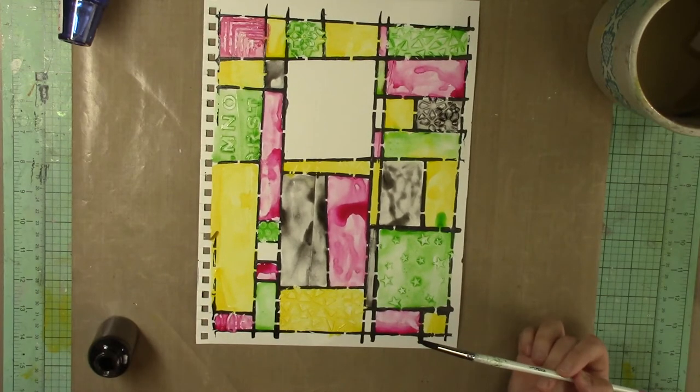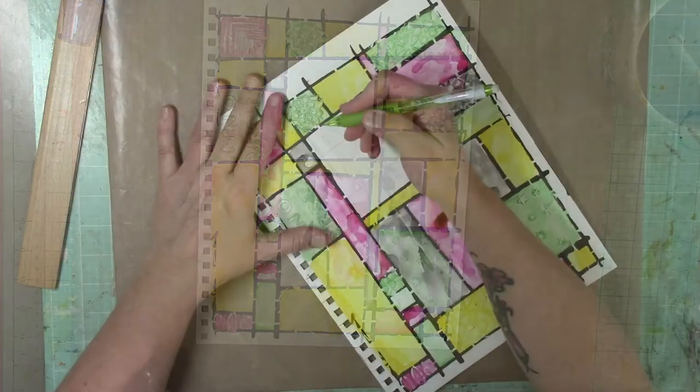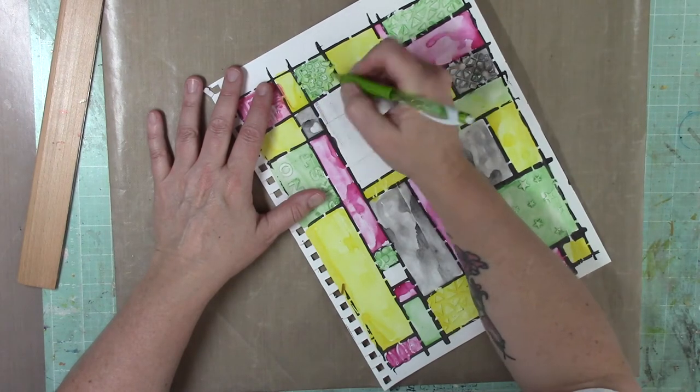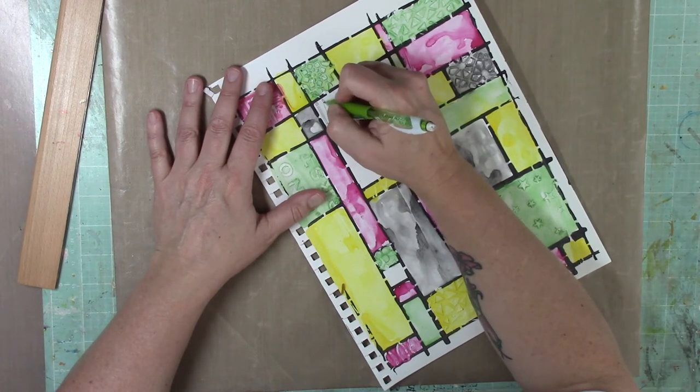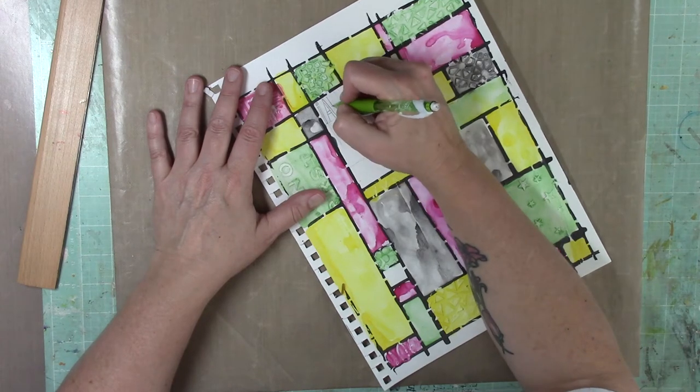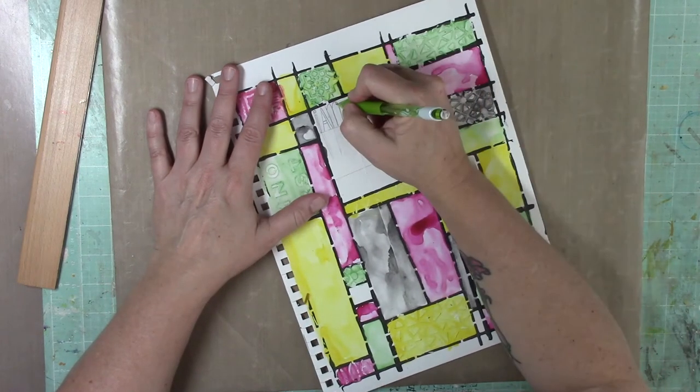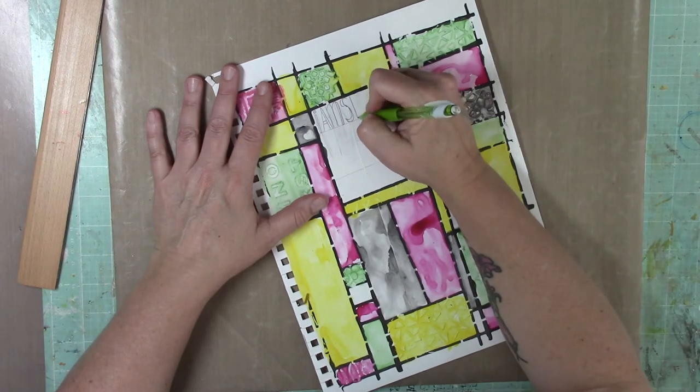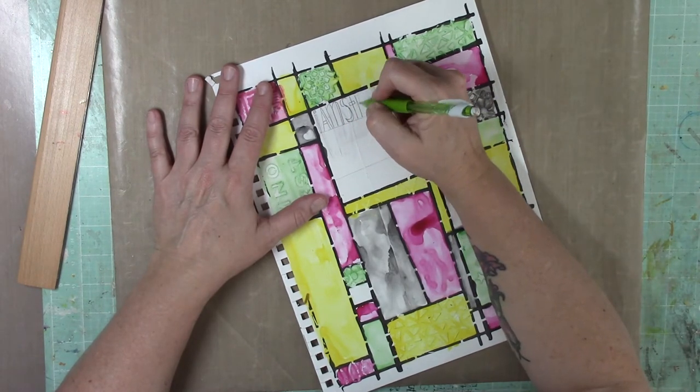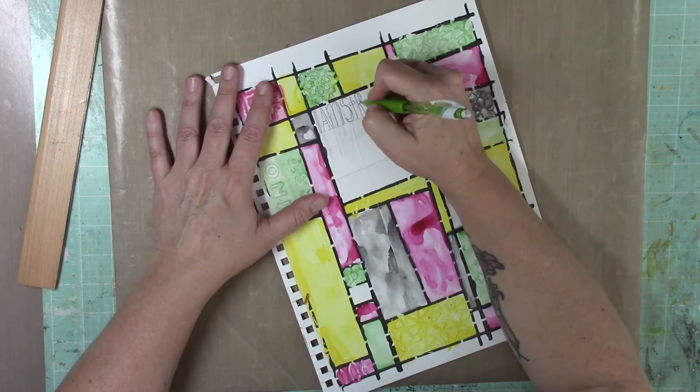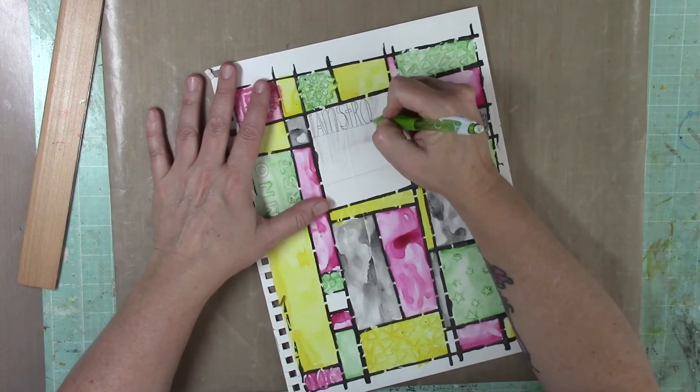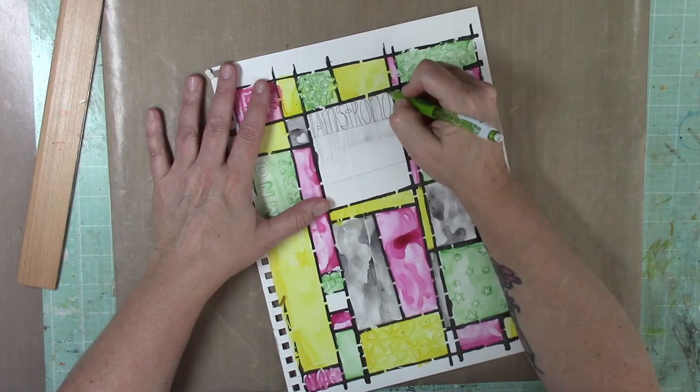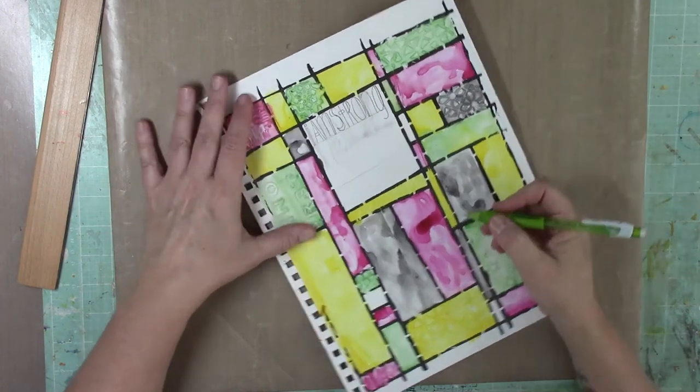Now I'm adding the sentiment I want to my page. I just grid off that open space with a ruler so I know where my words are going to go. I'm using a pencil to outline it. There's nothing wrong with using a pencil because you can erase once you write over it with your permanent pen or marker.